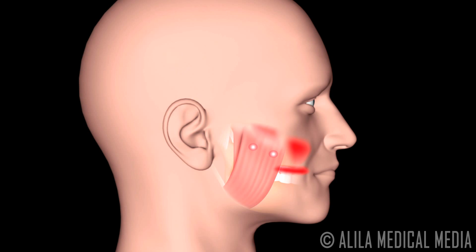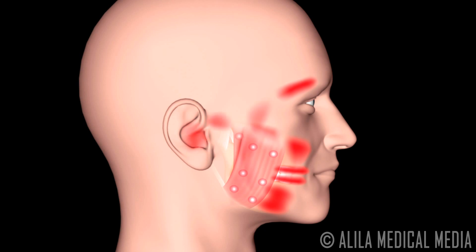The pain patterns are therefore consistent and are well documented for various muscles. Trigger points in the masseter refer pain to the cheeks, lower jaw, upper and lower molar teeth, eyebrow, inside the ear, and around the TMJ area.